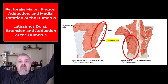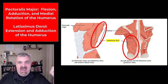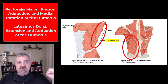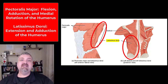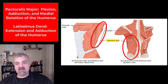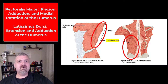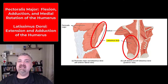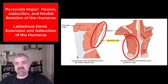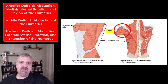The latissimus dorsi is going to extend and adduct your shoulder — think about that as a pull-up. If you're holding onto a pull-up bar, you're going to extend your arms back and then adduct them towards your side. A pull-up is a perfect way to use the latissimus dorsi muscle. As a tip, the teres major muscle in the shoulder also has the same function, so it kind of functions like a little latissimus dorsi.